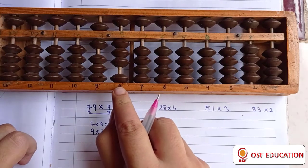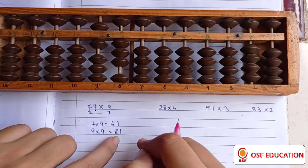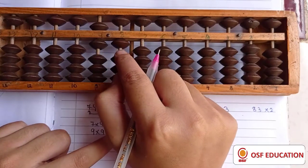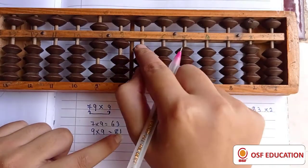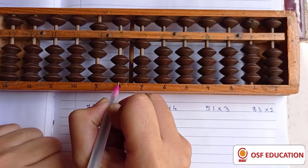So adding 81 from 10s to 1s, that is now adding 8. So the friend of 8 is 2 down 10 and adding 1. So our answer is 711.